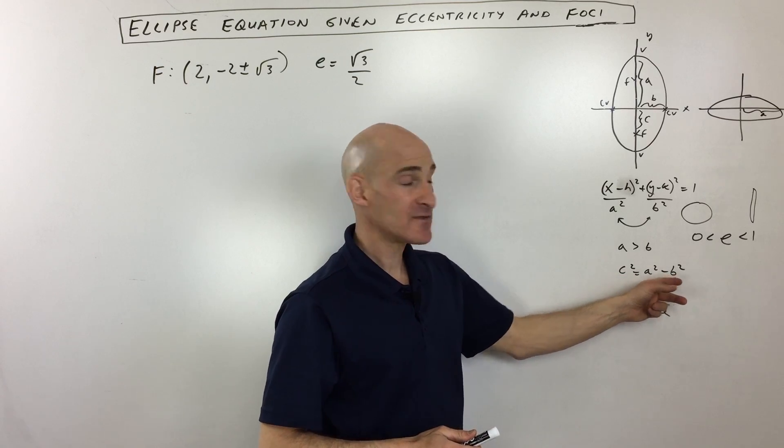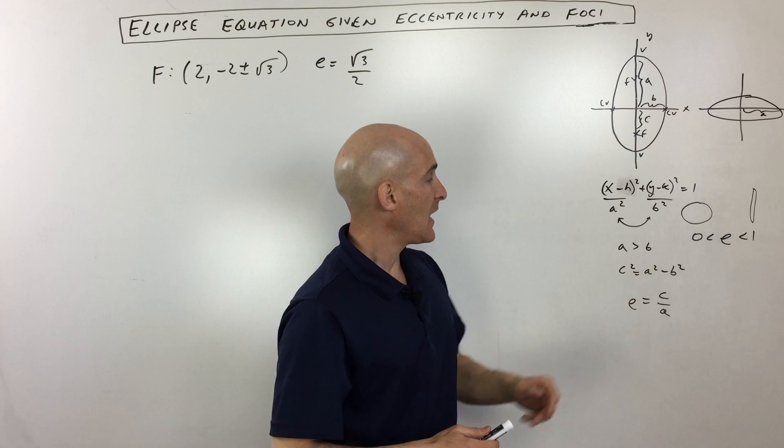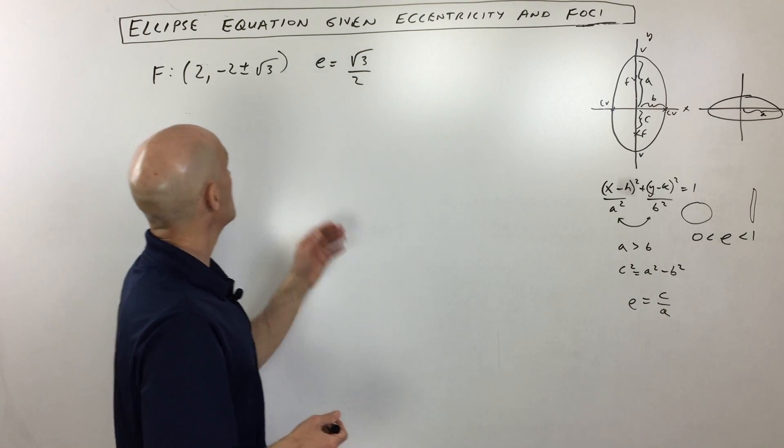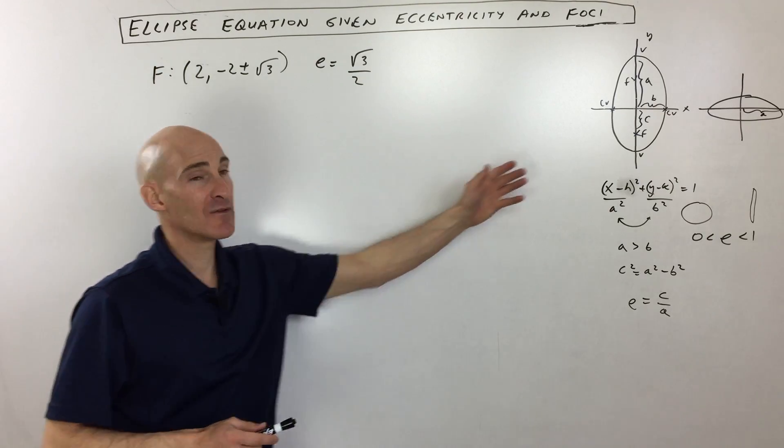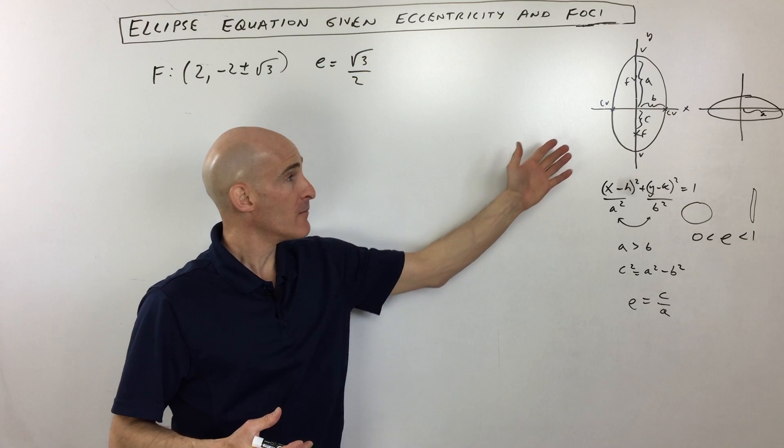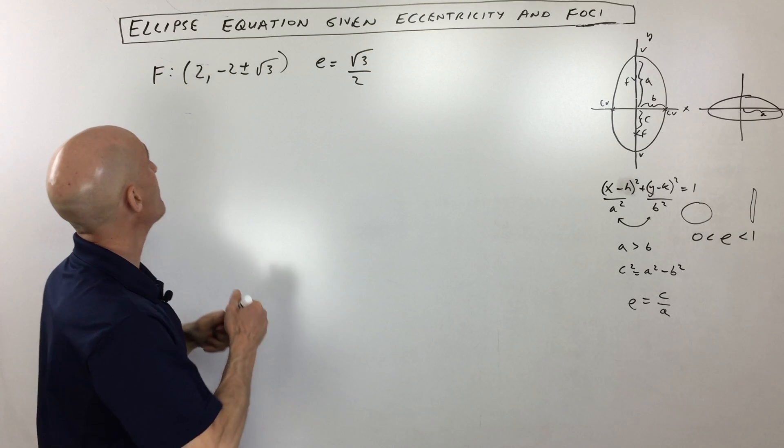And then we have an equation that ties all these values together, and that's C squared equals A squared minus B squared. And that's the basic idea. So let's see if we can jump into this problem here.